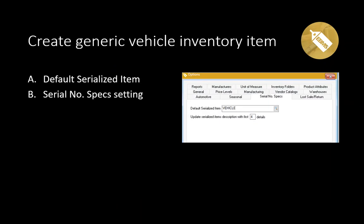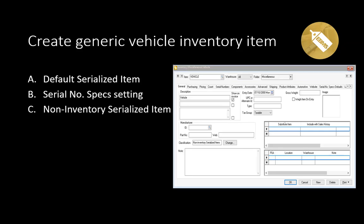One of the settings required to make this work seamlessly is that you must create a default serialized item to identify the product code used when creating vehicle records. On the screen, you will see a non-inventory serialized item labeled 'Vehicle.' This is a generic inventory code created in the product catalog and stored in the inventory options serial number specs. This inventory code must be classified as a non-inventory serialized item, used to identify vehicles that are not purchased or sold through EBMS.